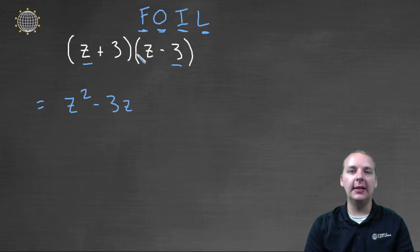Then the I, the inside terms, you'd have three times z, so that's plus three z. And then the L, the last, which would be three times negative three, which would be negative nine.